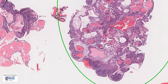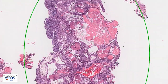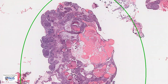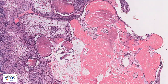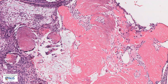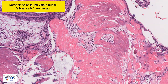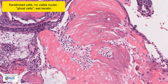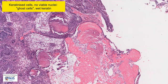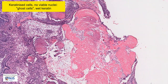Now let's look at the pink areas. These areas are actually formed from sheets of keratinized cells. However, the thing that is missing are the nuclei, so these are known as ghost cells. Sometimes you can actually almost see the little residual nuclei dropping off. And this type of keratin is known as wet keratin.